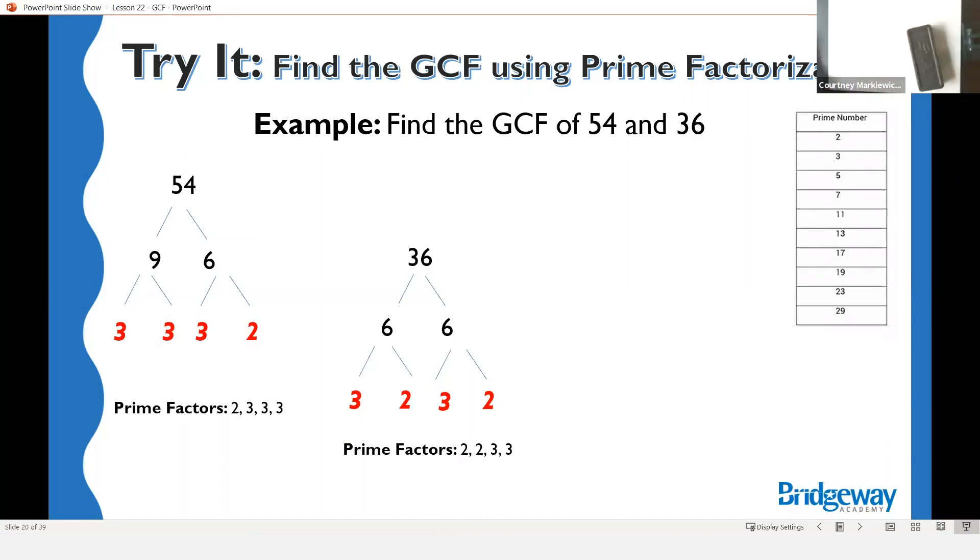All right, so now for the last part, after you make your factor trees, look for what they have in common. Raise your hand if you can tell me what these two lists have in common. What factors do both lists have in common? Because once we find those, we can multiply them together, and that will give us our GCF. All right, so Talia, what do you see? Help us out here.